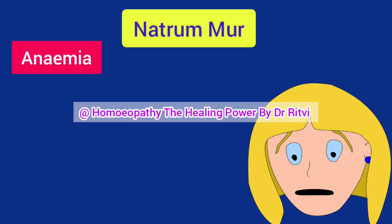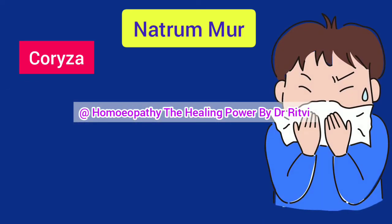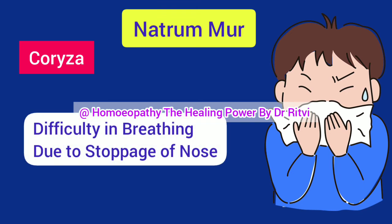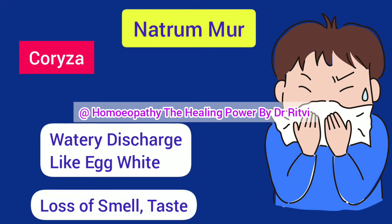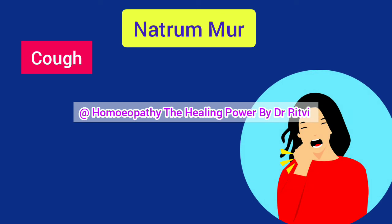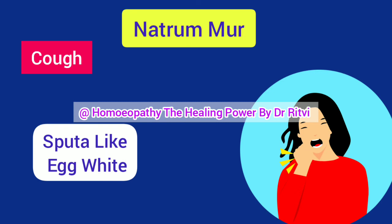Natrum Mur is indicated in anemia, generally where it is caused by loss of vital fluid. It is one of the best medicines for fluent and violent coryza. The discharge is thin and watery, just like the white of an egg, with violent sneezing and loss of smell and taste. Natrum Mur is also indicated in cough, where there is a sticking sensation felt in the throat region. The sputa is thick, whitish, and watery, just like the white of an egg. The cough aggravates in the morning and on the seashore.